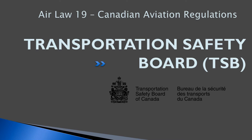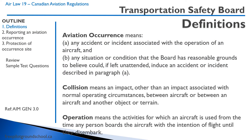This lesson, we're going to talk about the Transportation Safety Board. Some definitions. An aviation occurrence is any accident or incident associated with the operation of an aircraft, or it could be a situation or condition the Board has reasonable grounds to believe could, if left unattended, induce an aircraft accident or incident.